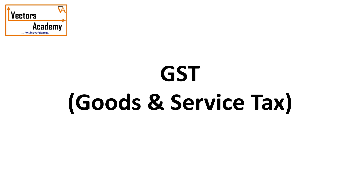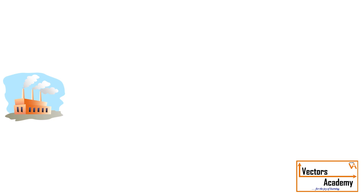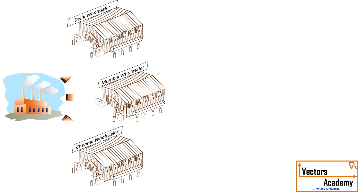GST: goods and service tax. Before understanding what GST is, let us understand what is the supply chain. A manufacturer manufactures a product and sells it to the wholesaler. A wholesaler is someone who buys the product from the manufacturer in huge quantities. Once the wholesaler has stocked his items, he can sell it to the retailers or shopkeepers.